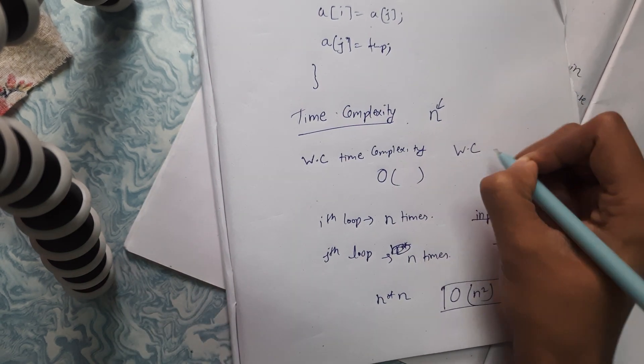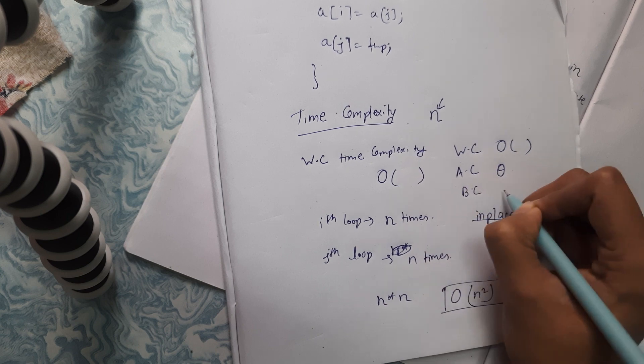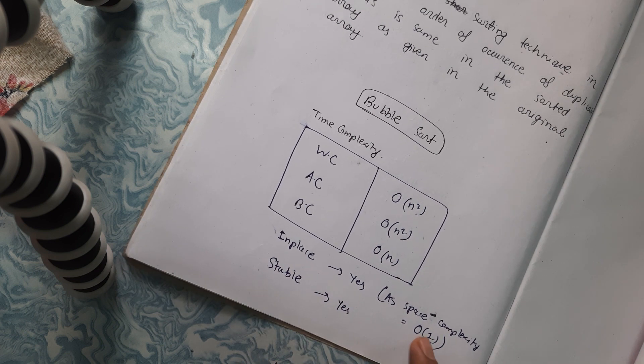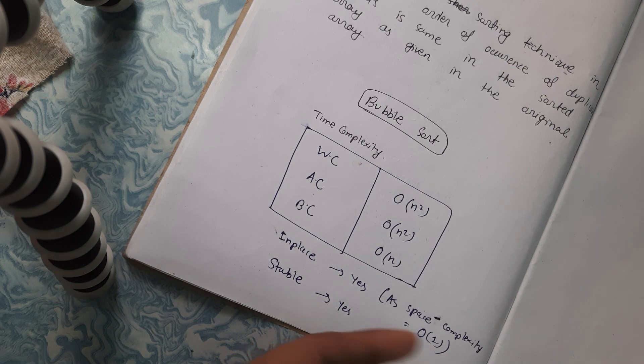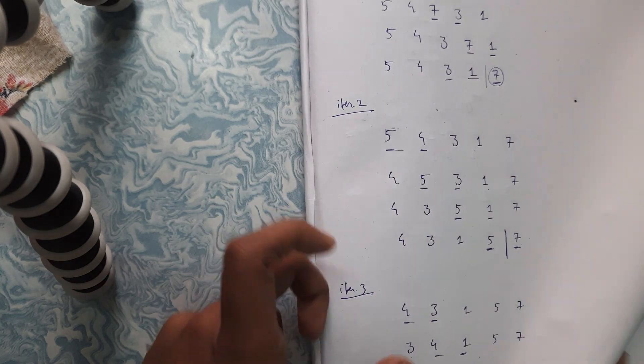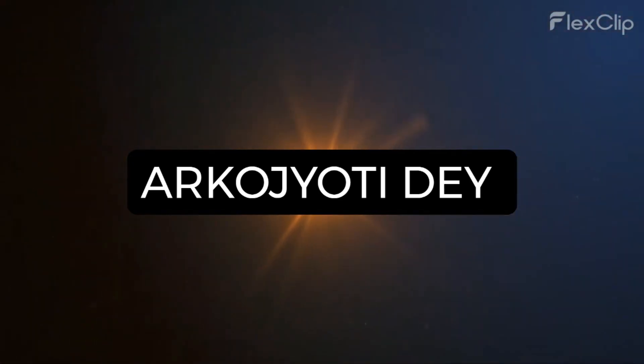For worst case we use Big-O notation, for average case Big-Theta, and for best case Big-Sigma — those are the correct notations. The worst case time complexity is O(n²), average case is Θ(n²), and best case is Ω(n) when using the flag variable. Space complexity is O(1) since it is an in-place algorithm. I suggest you remember the algorithm, take an example, and derive the code whenever needed. That's it for today — I hope you liked the video.